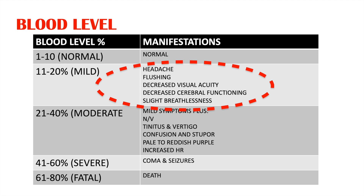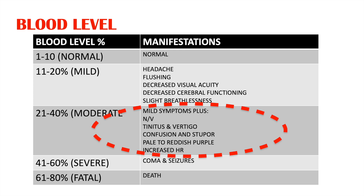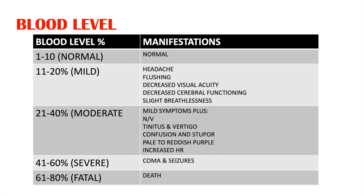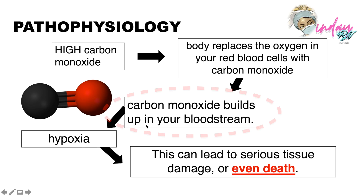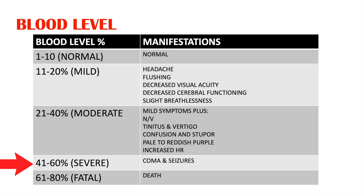The moderate level has a blood level of 21 to 40. In addition to the mild manifestations, we add nausea and vomiting, tinnitus and vertigo, confusion and stupor, pale to reddish-purple skin color, and increased heart rate. The reddish-purple color occurs because there is increased carbon monoxide build-up in the bloodstream causing hypoxia. The severe level has a blood level of 41 to 60; at this stage the patient may suffer from coma and seizures.